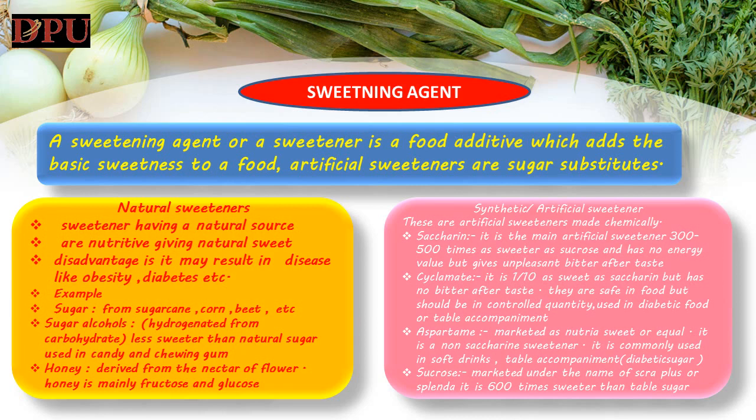4. Sucralose — marketed under the name Scrumptious or Splenda; it is 600 times sweeter than table sugar; used in bakery products, candy, breakfast bars, soft drinks and canned fruits.